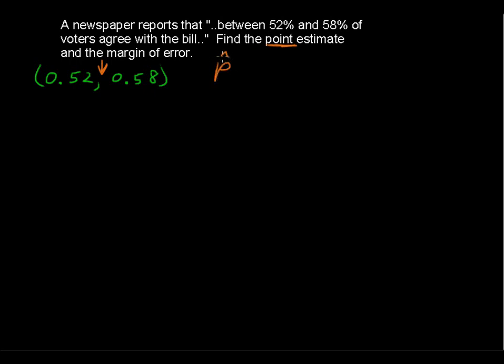So our point estimate, p-hat, that's the point estimate of the proportion. It's not the true proportion. We don't know what the true proportion is. If we did, we wouldn't be doing a confidence interval.